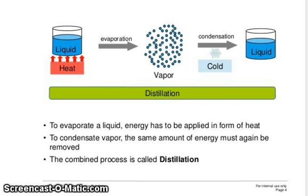To evaporate a liquid, energy has to be applied in the form of heat. To condense the vapor, the same amount of energy must again be removed. The combined process is called distillation.